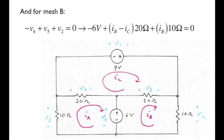Now we wish to apply those steps 3 and 4 to each mesh in the circuit. Let's turn to mesh B. Kirchhoff's voltage law may be expressed as minus V6 plus V5 plus V2 equals zero. V sub 6 is just equal to 6 volts. V5 and V2 can be expressed in terms of Ohm's law and the properties of mesh currents as 20 ohms times the quantity IB minus IC and 10 ohms times I sub B, respectively.